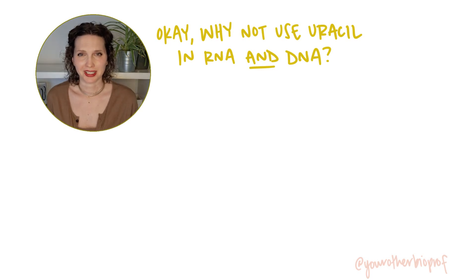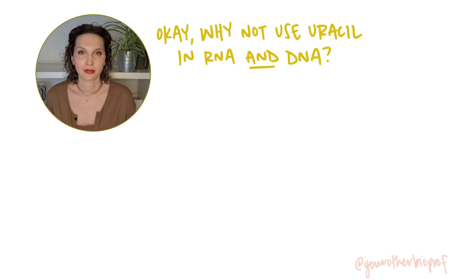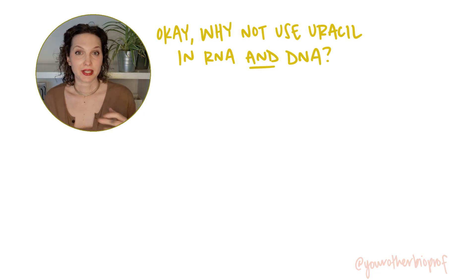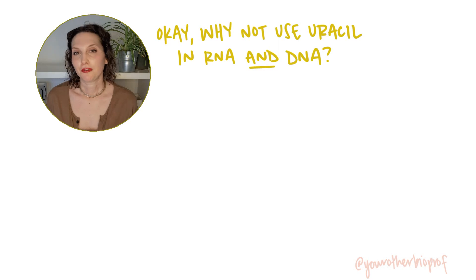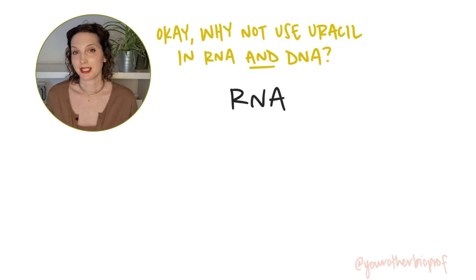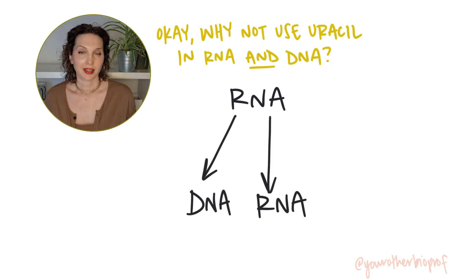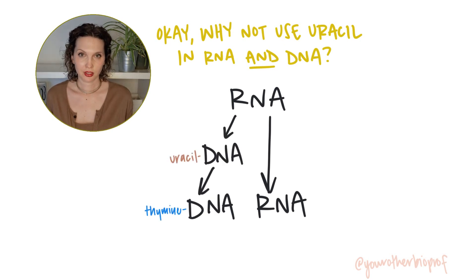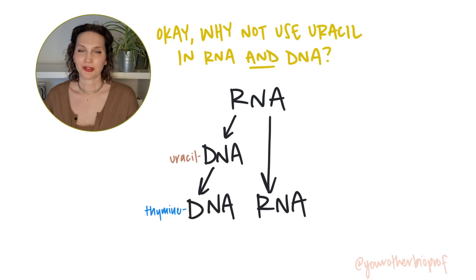So if thymine's a little energetically expensive, why use it in the first place? Why not just use uracil for both RNA and DNA? Well, maybe we kind of did — not we as in humans, way before that. The prevailing hypothesis is that RNA came first. DNA evolved from RNA, and like RNA, that early DNA would have used uracil. So what changed? Well, that likely has to do with the other pyrimidine: cytosine.